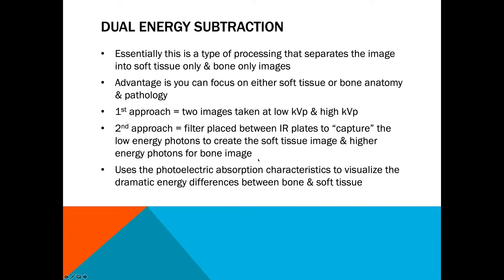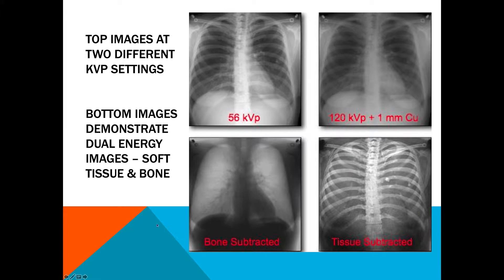Dual energy subtraction uses the photoelectric absorption characteristic to visualize the dramatic shift between bone and soft tissue. Here's a good example showing the low kVp and high kVp images side by side, along with what it looks like when the bone is subtracted versus when the tissue is subtracted — focusing on soft tissue in one image and bone in the other. Dual energy is something you see quite a bit in CT and mammography.